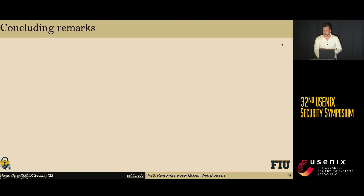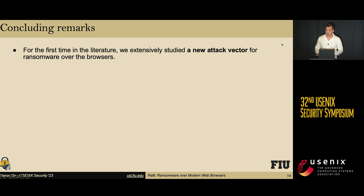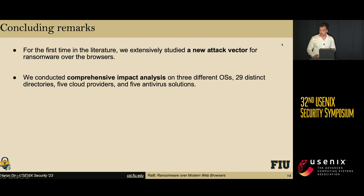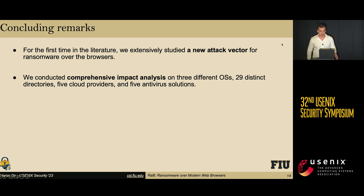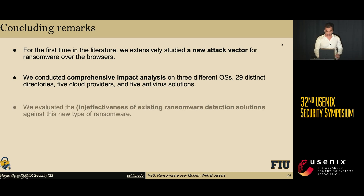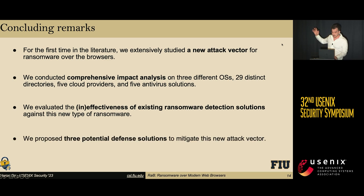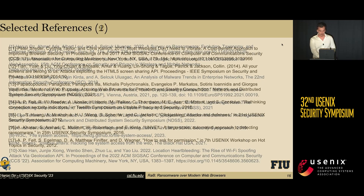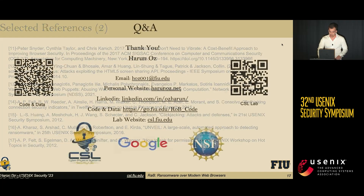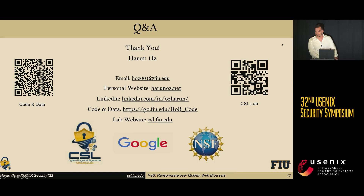Here are the concluding remarks of our study. For the first time in the literature, we extensively analyzed a new attack vector for ransomware over modern web browsers. We conducted a comprehensive impact analysis of this new type of ransomware on different operating systems, directories, cloud providers, and antivirus solutions. We also evaluated the ineffectiveness of existing ransomware defense solutions against this new threat, and proposed three different potential defense solutions to mitigate this new attack vector. Here are the references used in our work. Thank you so much for your attendance.